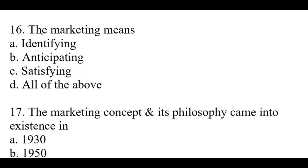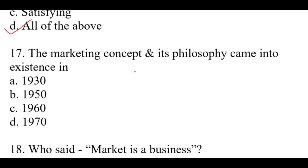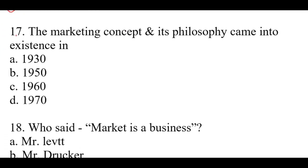Question number fifteen: Walmart and Kmart are examples of — right option is C: Discount stores. Question number sixteen: The marketing means — right option is D, all of the above: identifying, anticipating, and satisfying. Question number seventeen: The marketing concept and its philosophy came into existence in — right option is B: 1950.